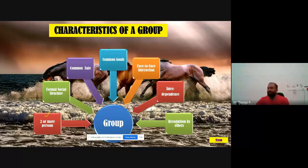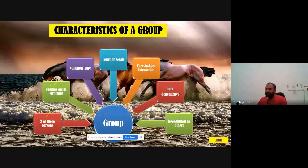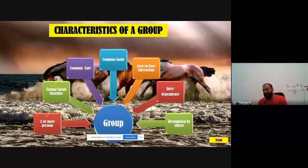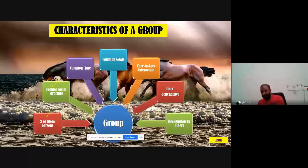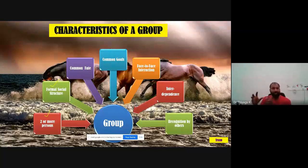Groups have a formal social structure. Even in cricket, there is already a defined structure: who is the bowler, who is the batsman, who is the all-rounder, who is the captain. Even though a cricket team consists of eleven players, all eleven have some kind of specific structural role. The wicket-keeper stands behind the stumps and the bowler bowls from the opposite end — each has a structural role they are playing.